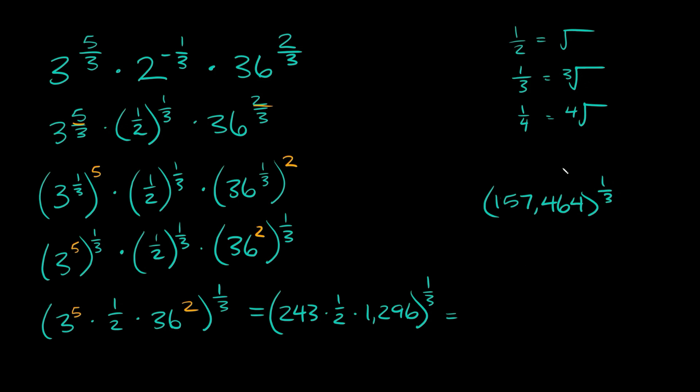Now remember taking a number and raising it to the 1 third power is the exact same thing as taking the cube root of it. So this is the same thing as taking the cube root of 157,464. And when you plug that into your calculator, you'll get that this is equal to exactly 54. So then our answer here is just 54.